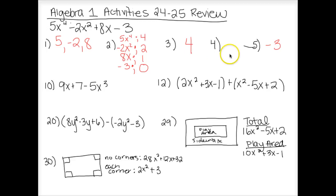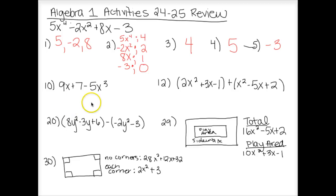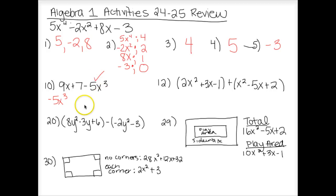Number four asks for the leading coefficient. The leading coefficient is the coefficient of the term with the highest exponent. The highest exponent was 4, and its coefficient is 5, so 5 is the leading coefficient. Next is putting answers in standard form, which is important because all your answers need to be in standard form. Standard form means going from highest exponent to lowest exponent. Here the highest exponent is 3, so negative 5x cubed starts first, then linear terms, then the constant.